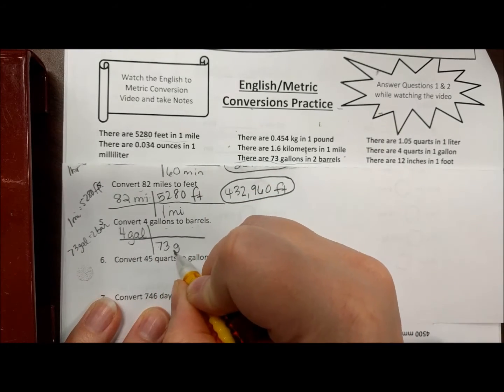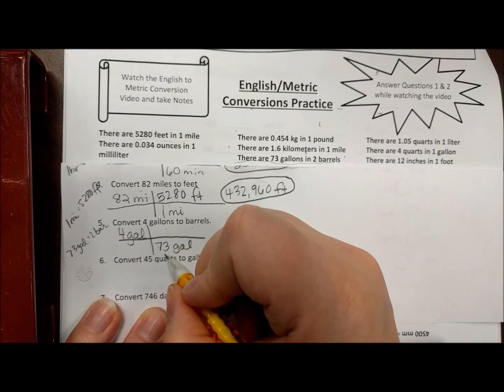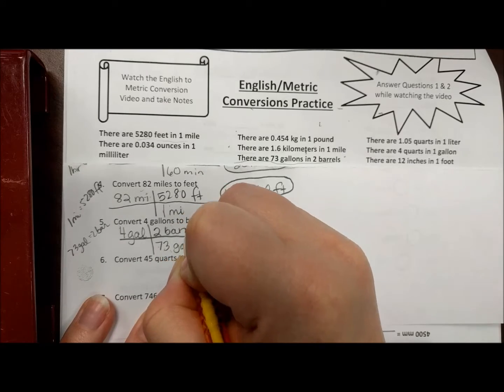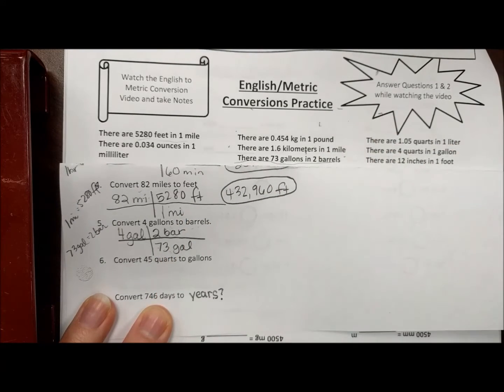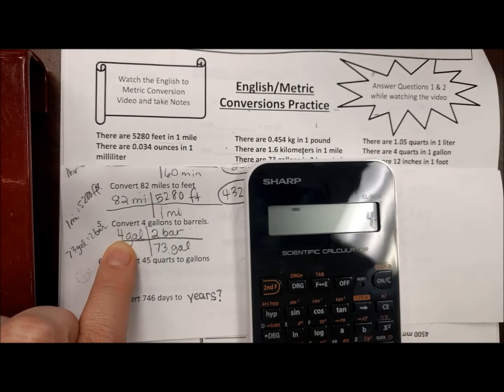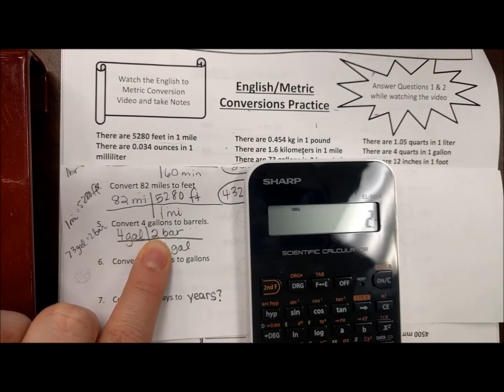So 73 gallons is going to go on the bottom. Our diagonals always match, whatever that's equal to goes on the top, so two barrels goes on top. To do the math, we're going to do 4 times 2, and without clearing we're going to divide it by 73.